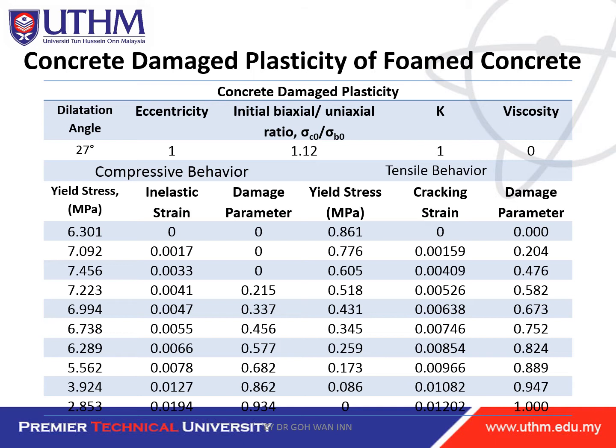For compressive strength and tensile behavior, you need to obtain these from your experimental study. Compressive behavior is obtained by cube test or cylinder test under uniaxial load, and tensile behavior by the split tensile test. From the tests you will get the yield stress, inelastic strain, and damage parameters for both. You need to process these from the raw data.